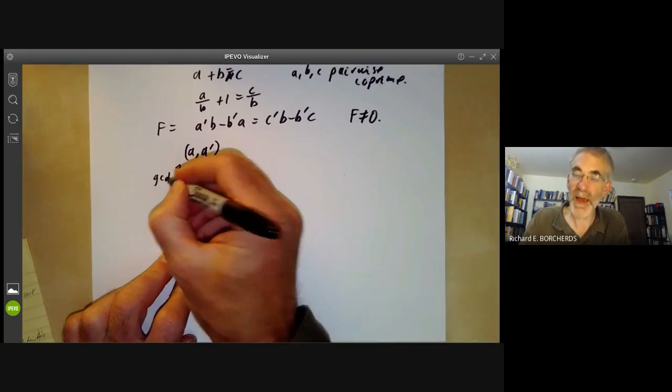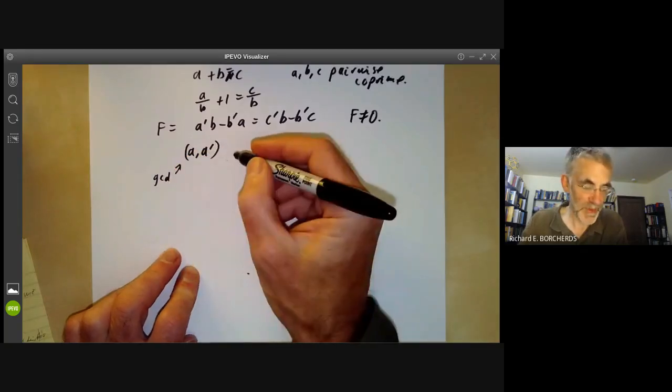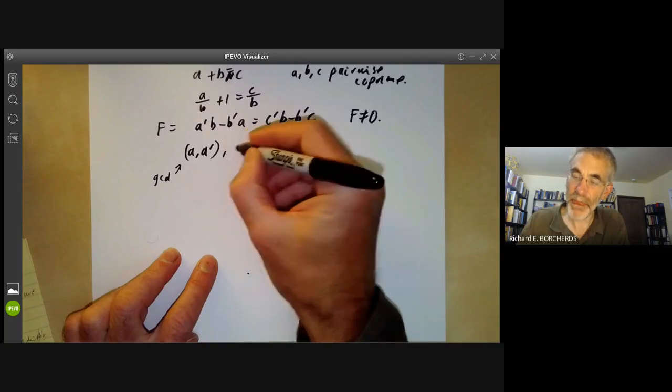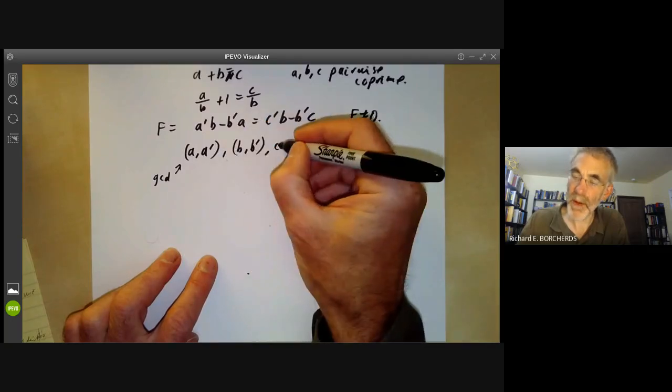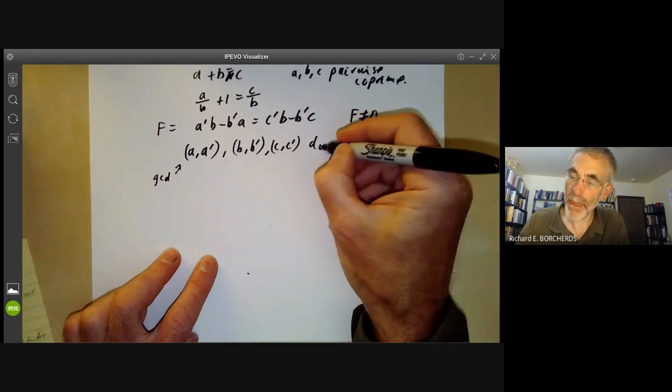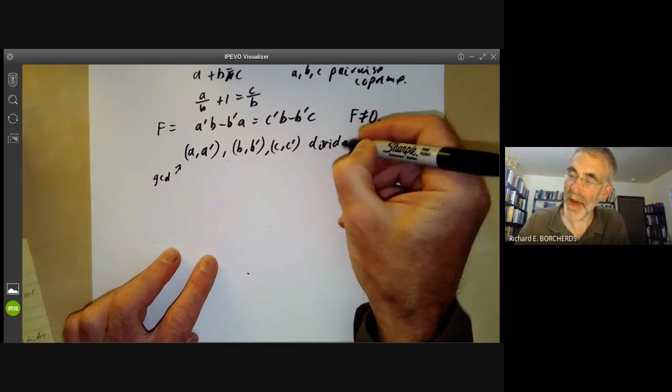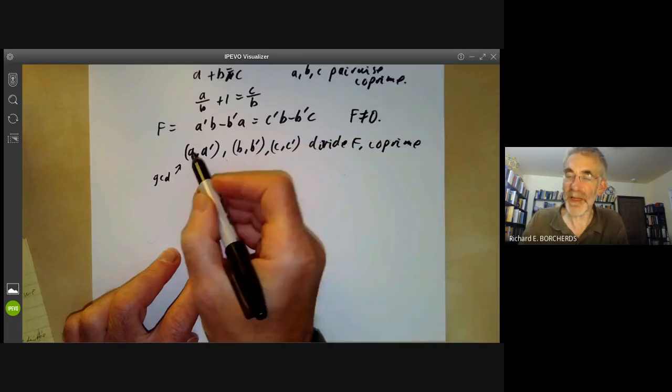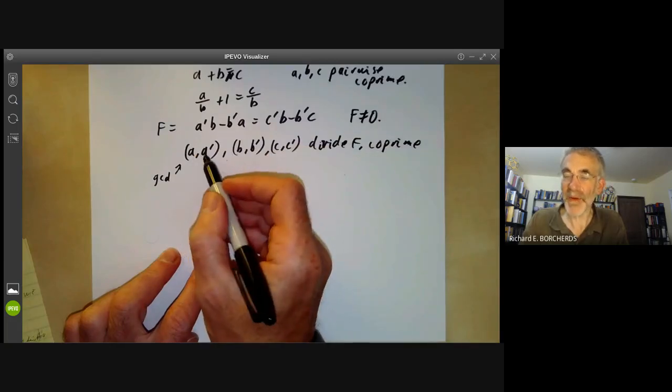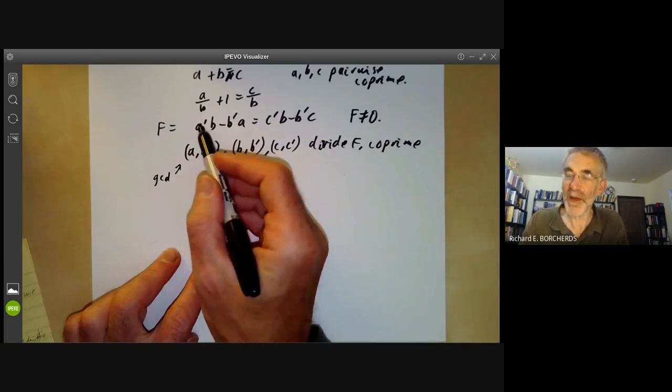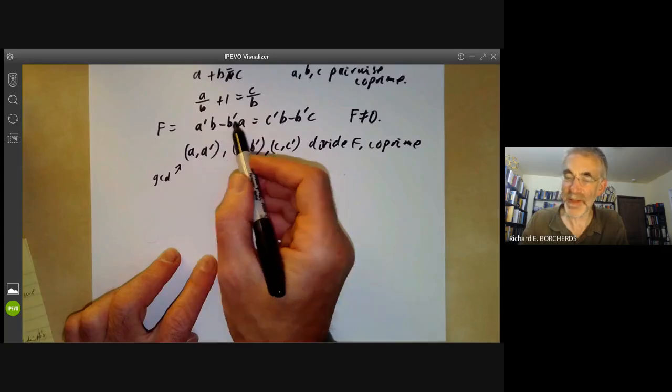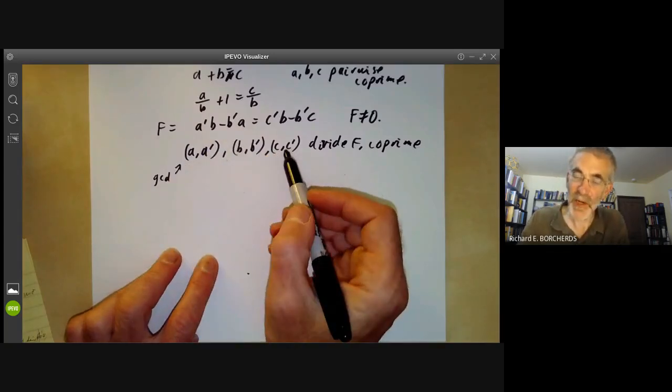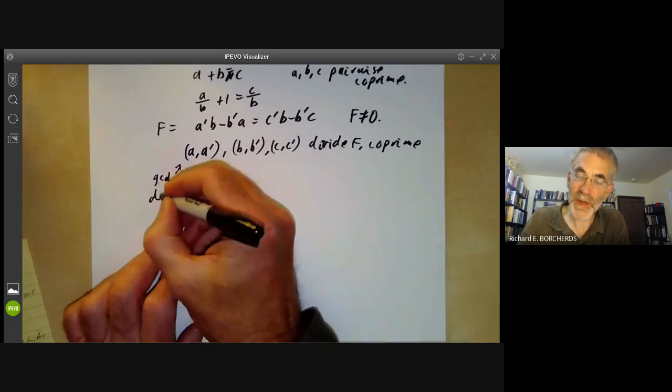And now we also notice that let's write (A, A prime) for the greatest common divisor of A and its derivative. And we notice that these all divide F and are co-prime. So (A, A prime) divides F because any common divisor of A and A prime divides both that factor and that factor and so divides F. And similarly, these all divide F. Since they're co-prime,